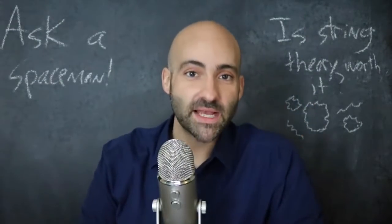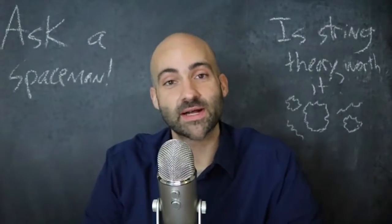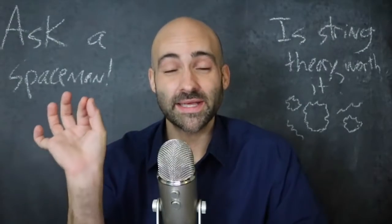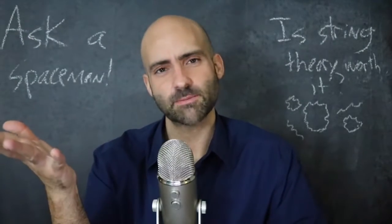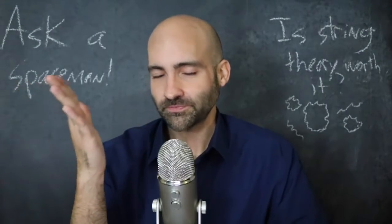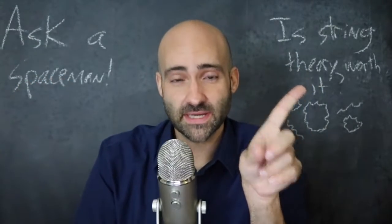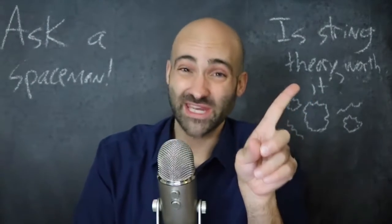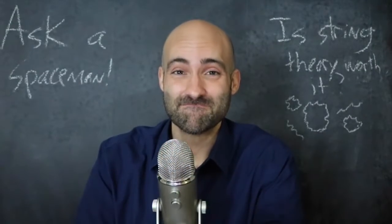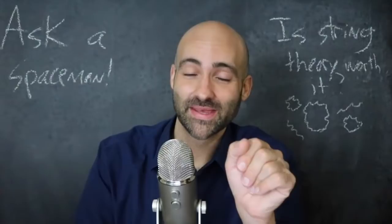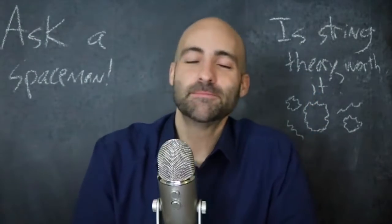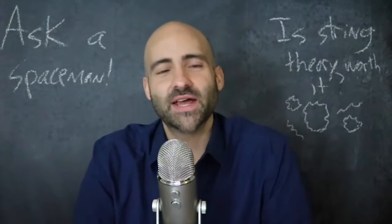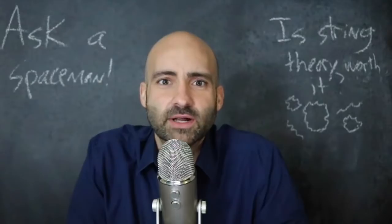My two favorite ones — and by favorite, I mean I hate them — the super partner particle of the up quark is the sup quark. Sup quark. How's it going? And the super partner particle of the W boson is the Wino boson. I just said that out loud. So the game of experimental physics is to try to find some evidence of supersymmetry, to find a Wino boson somewhere in our particle colliders.